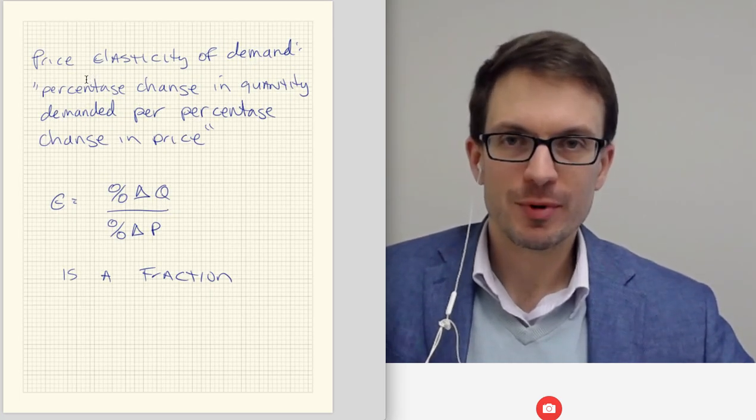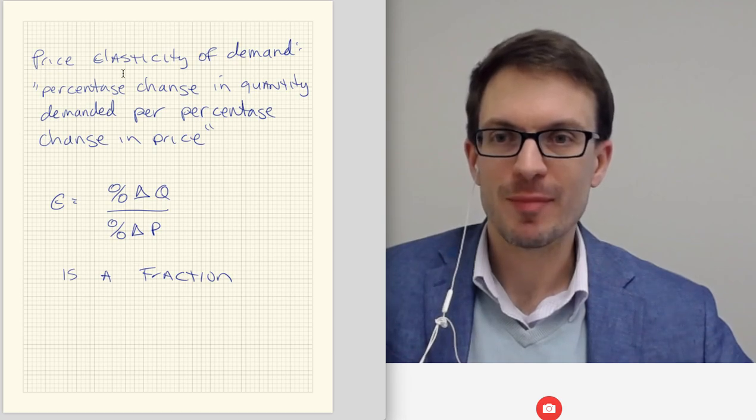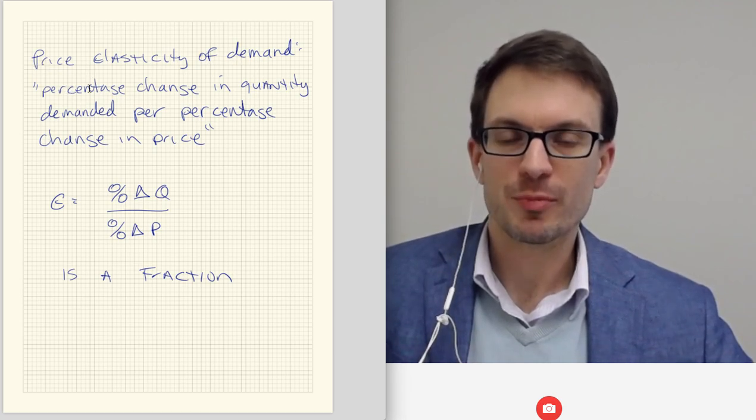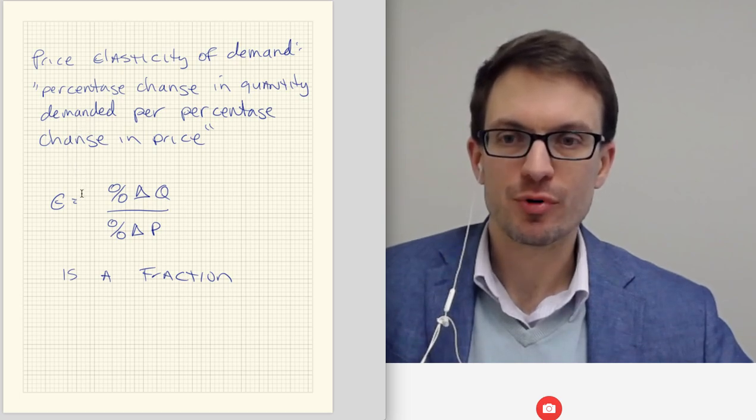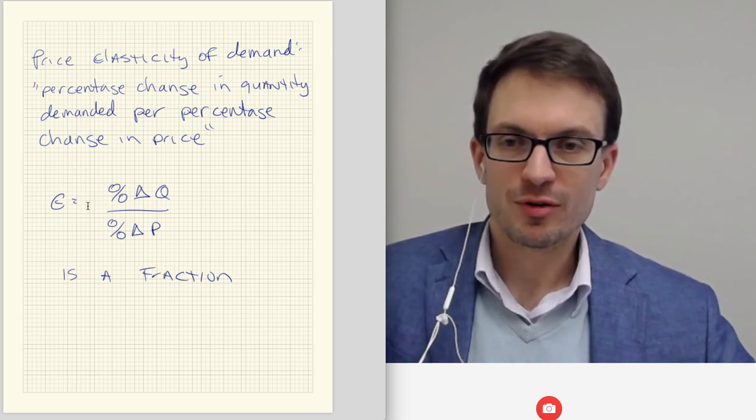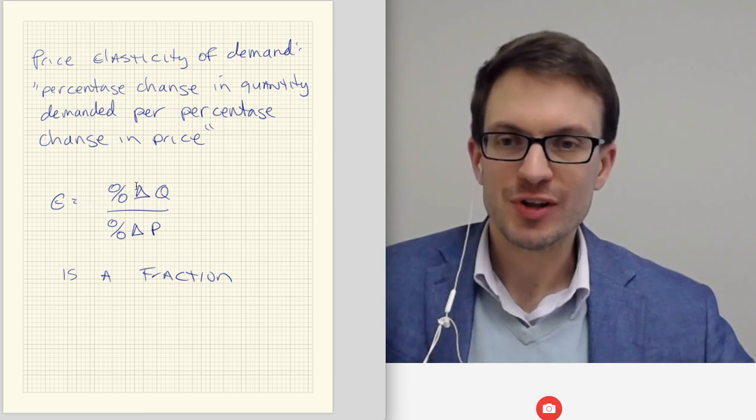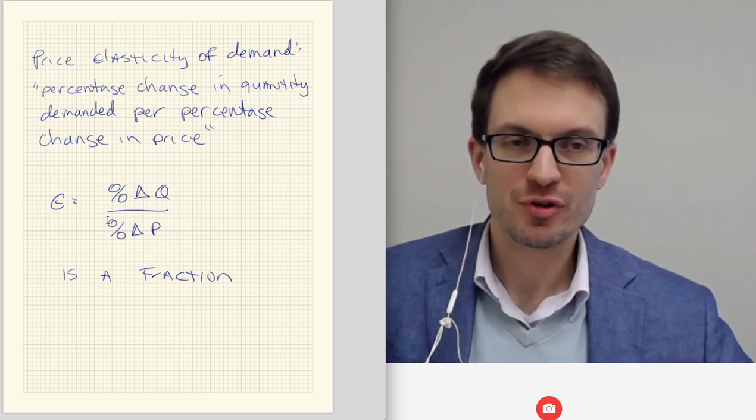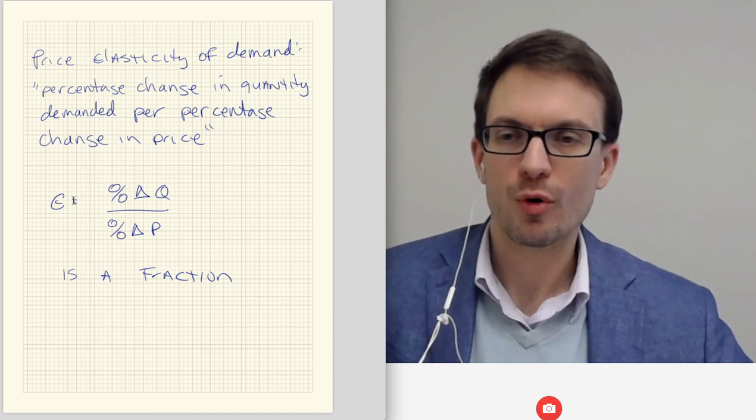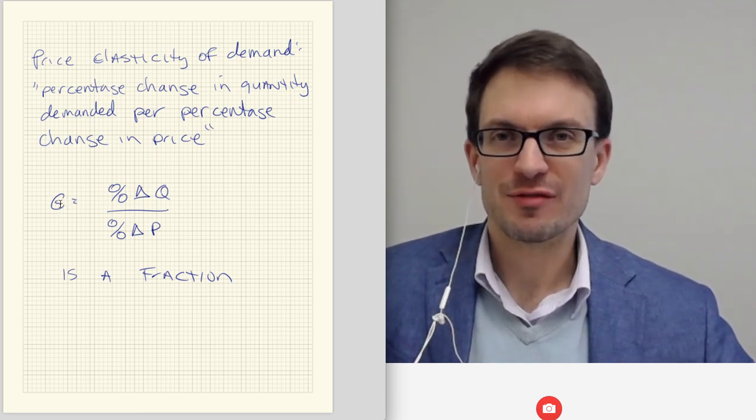Let's think about the definition of price elasticity of demand. Price elasticity of demand is the percentage change in quantity demanded per the percentage change in price. We represent it as the percentage change in quantity divided by the percentage change in price, using epsilon (ε) to stand for elasticity.